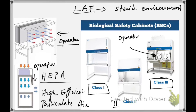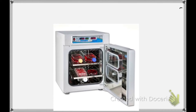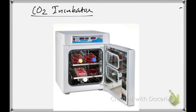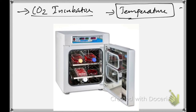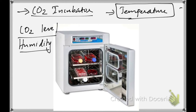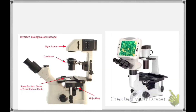The next important equipment used in animal cell culture laboratory is the CO2 incubator. A regular incubator is used to maintain temperature, but for animal cell culture we need a carbon dioxide incubator — one that maintains temperature, carbon dioxide level, as well as humidity. These three conditions must be maintained for proper growth of animal cell culture.